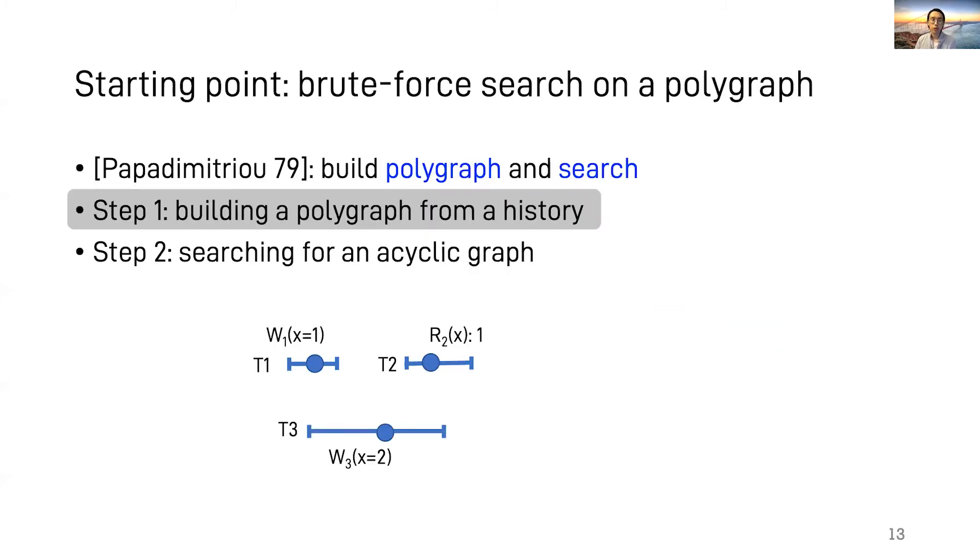First, for building a polygraph from a history. Suppose a history has three transactions that read or write a key X. In this talk, let's assume that all the written values are unique.